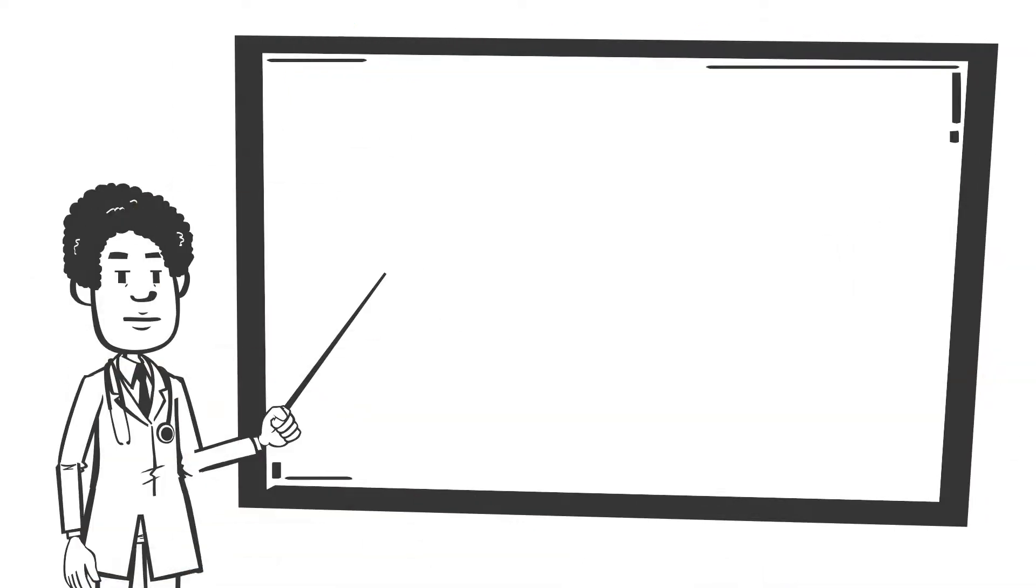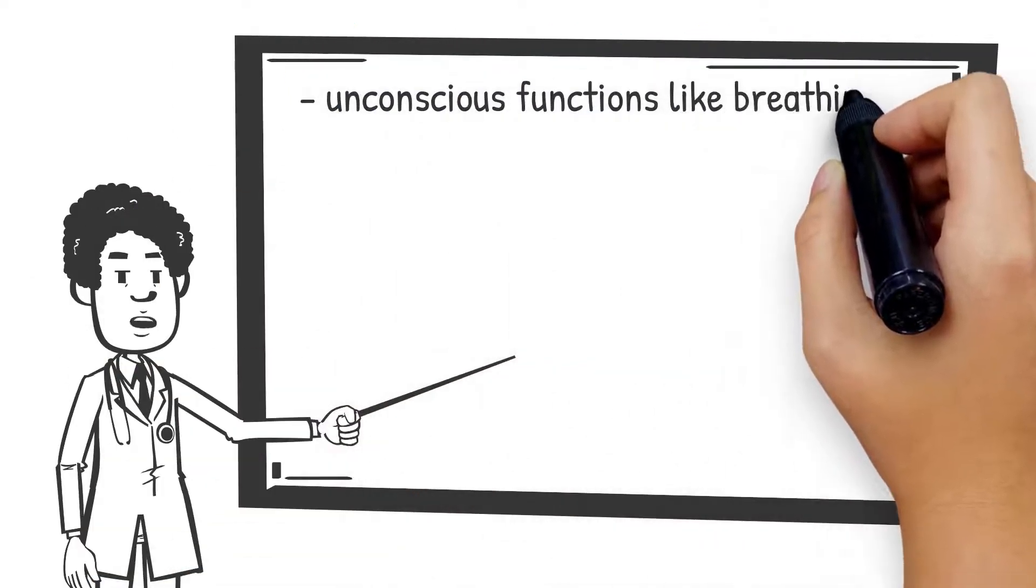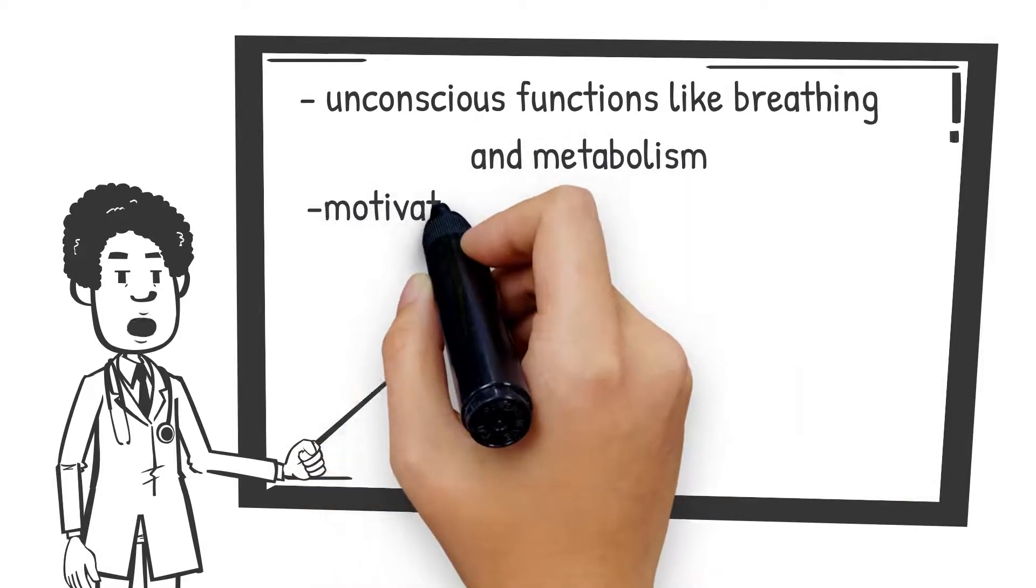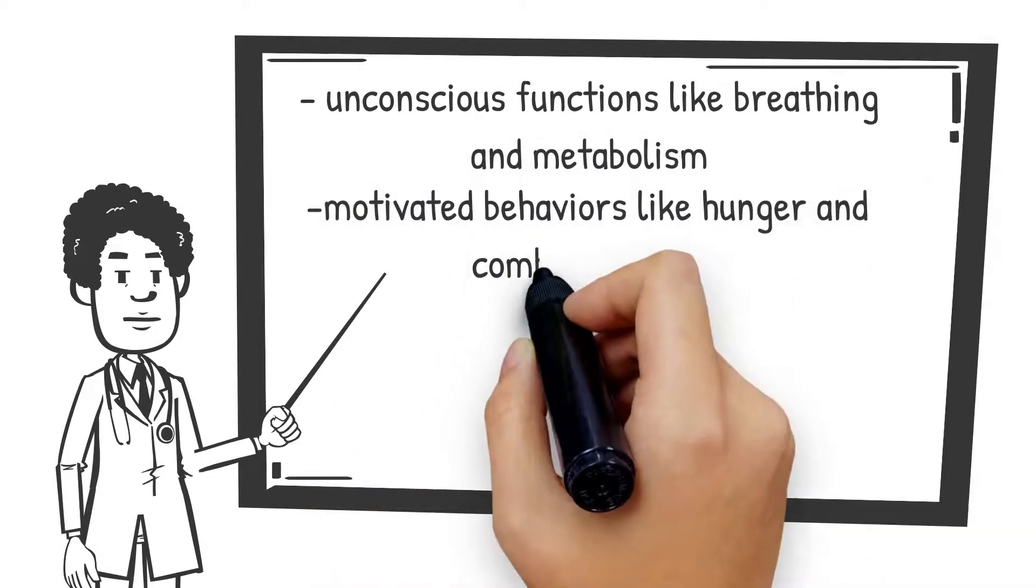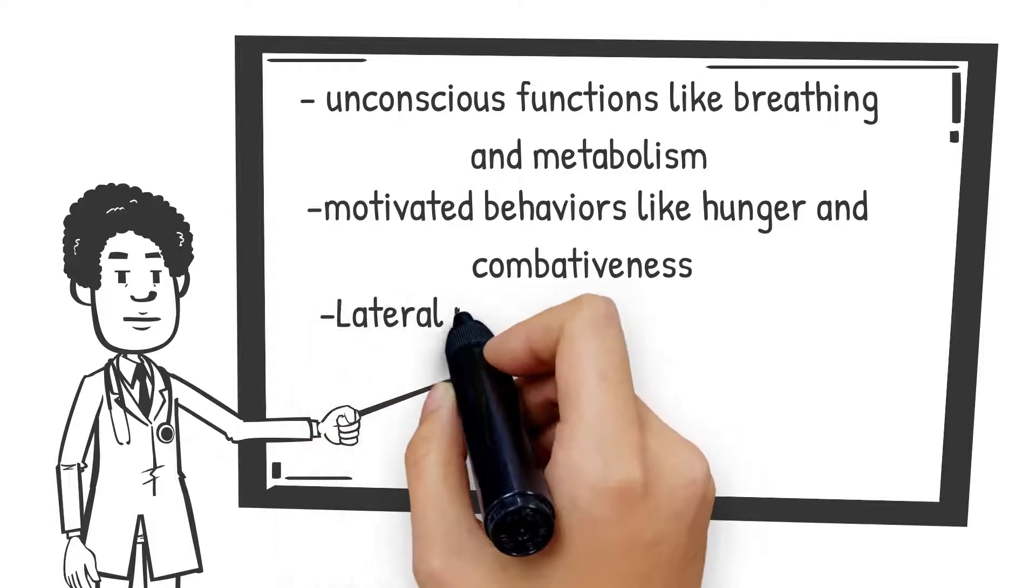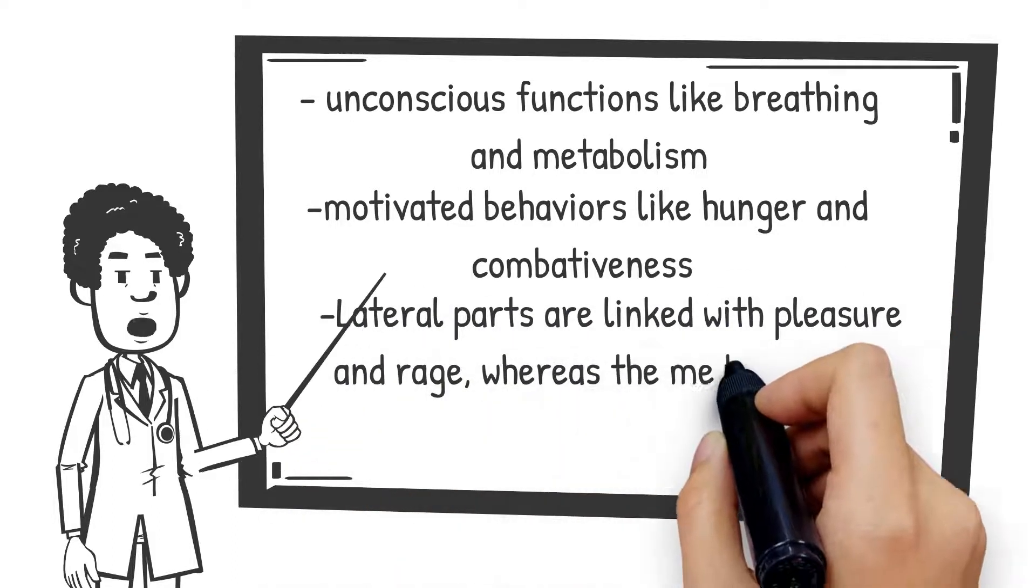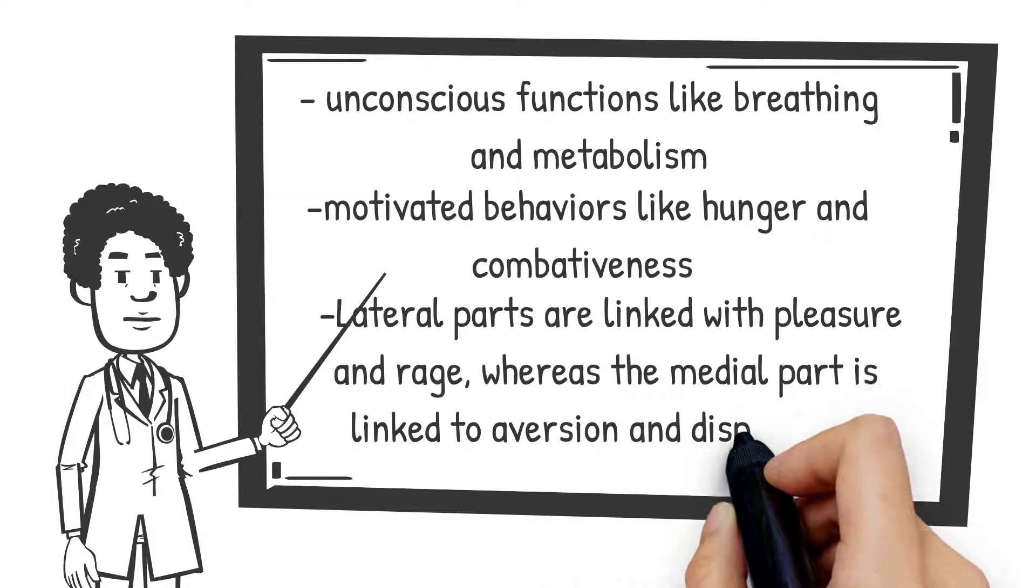Lesions on the hypothalamus affect unconscious functions like breathing and metabolism, and motivated behaviors like hunger and combativeness. Its lateral part is linked with pleasure and rage, whereas the medial part is linked to aversion and displeasure.